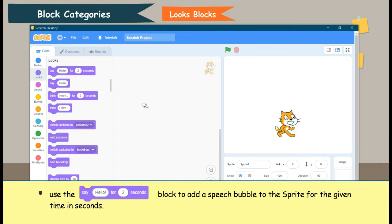Use the Say Hello for 2 seconds block to add a speech bubble to the sprite for the given time in seconds.